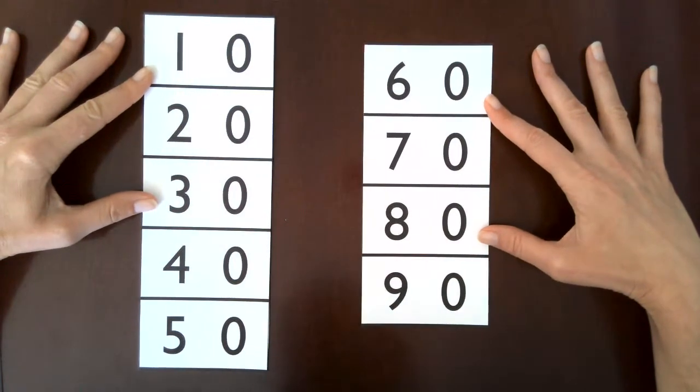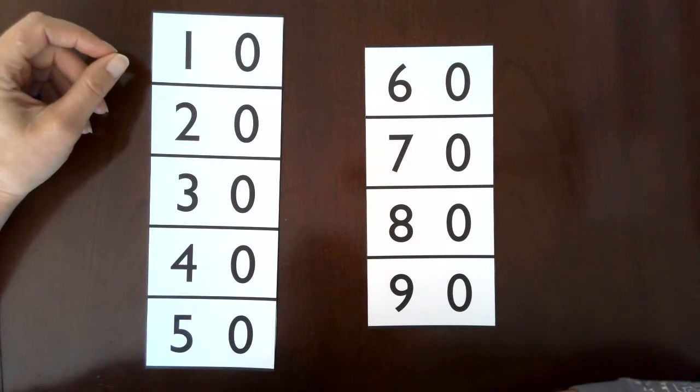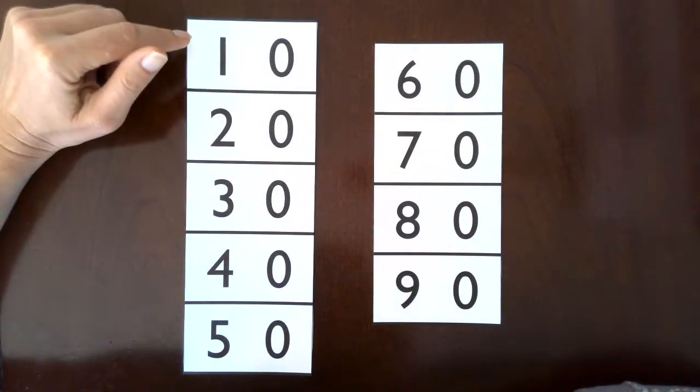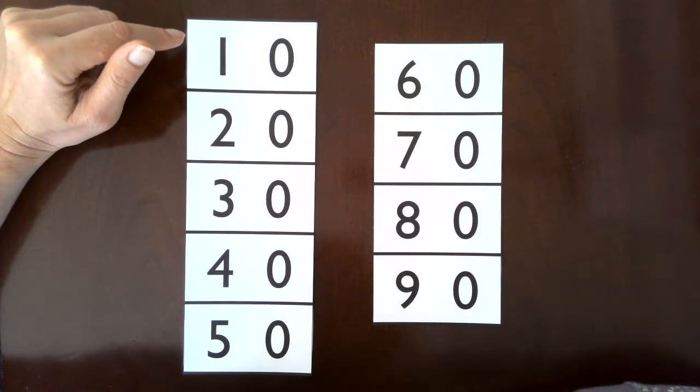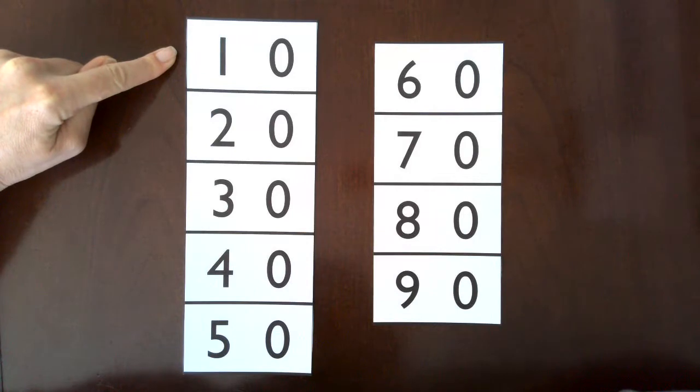I'm using a printed version here today. Today's lesson uses the three period lesson and in the first period the teacher will point to each numeral in sequential order and just give the name. So this is 10.